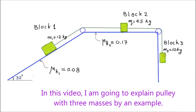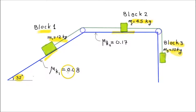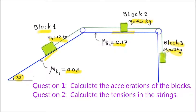In this video I am going to explain pulley with three masses by an example. As we can see in the figure, three blocks are connected by two light strings that pass over frictionless pulleys. Block one has a mass of 12 kilograms located on an inclined plane 32 degrees above the horizontal. Block two has a mass of 4.5 kilograms located on the horizontal plane. Block three is 10 kilograms and is hanging. The coefficient of kinetic friction on the inclined plane is 0.08 and on the horizontal plane is 0.17. Question one: calculate the acceleration of the blocks.